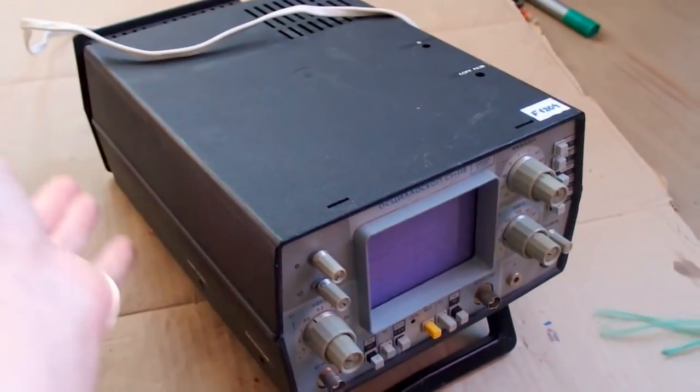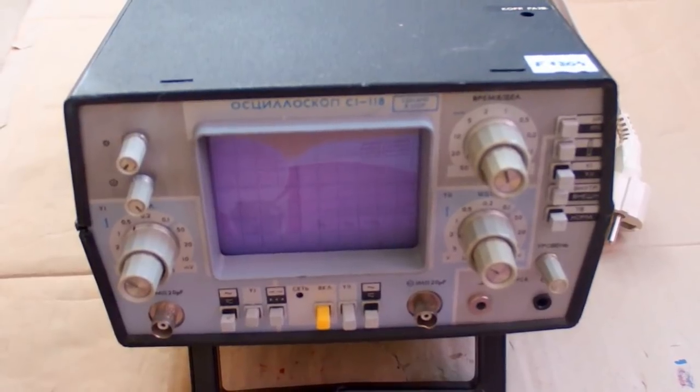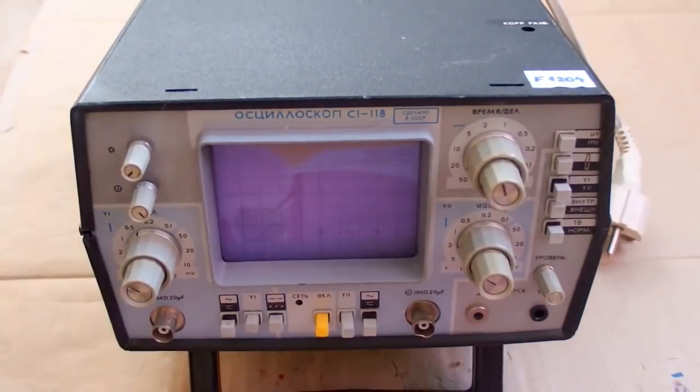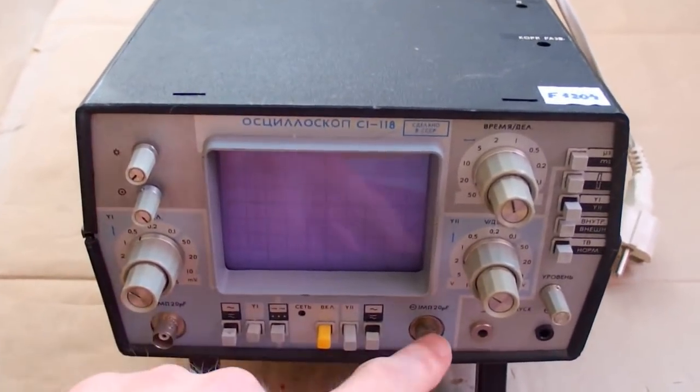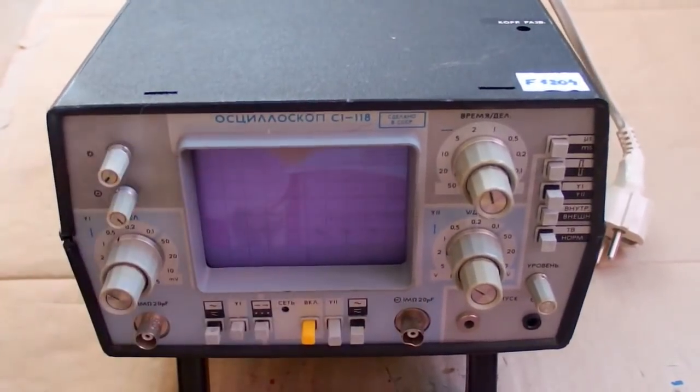I have seen about 20 kilogram analog oscilloscopes. So this one is actually one of the smallest analog oscilloscopes, and yet it has two channels, which most of the smallest ones don't have.